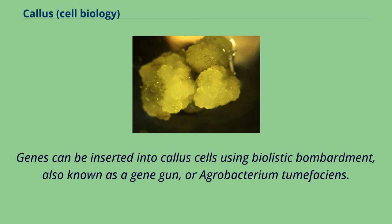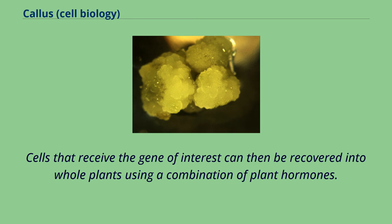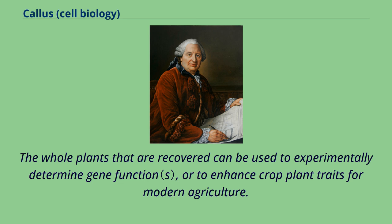Genes can be inserted into callus cells using biolistic bombardment, also known as a gene gun, or Agrobacterium tumefaciens. Cells that receive the gene of interest can then be recovered into whole plants using a combination of plant hormones. The whole plants that are recovered can be used to experimentally determine gene function, or to enhance crop plant traits for modern agriculture.